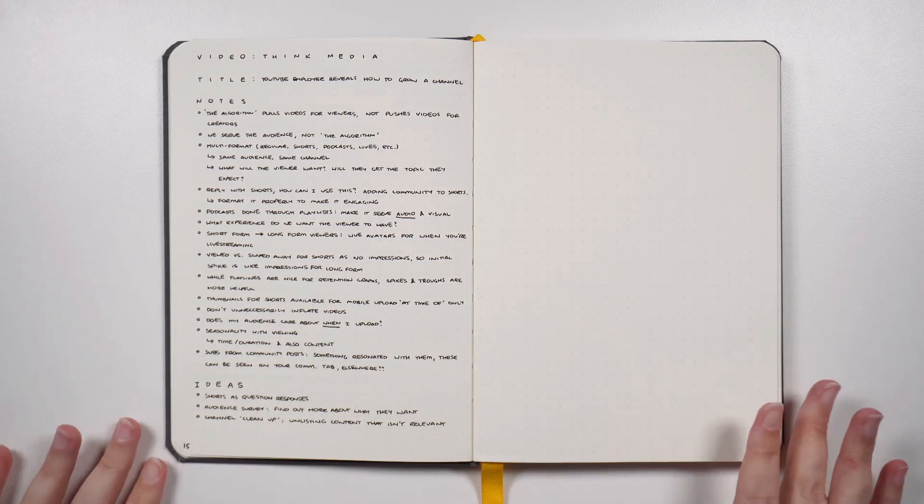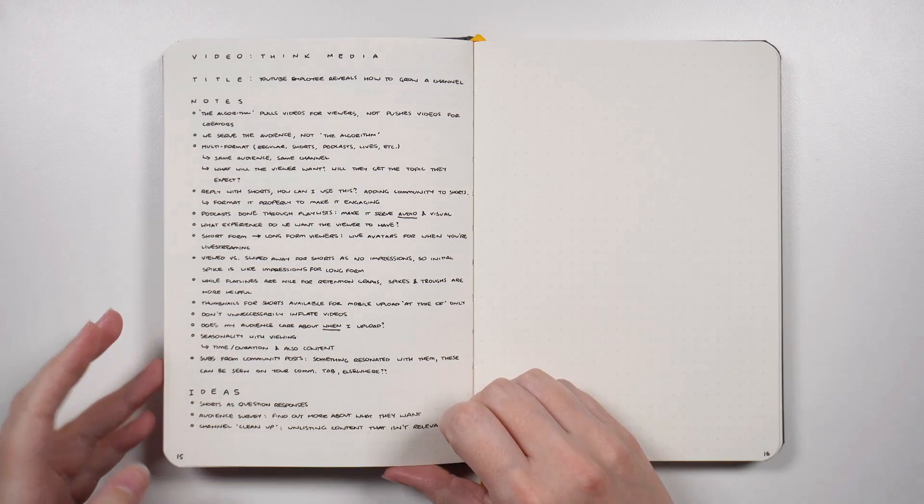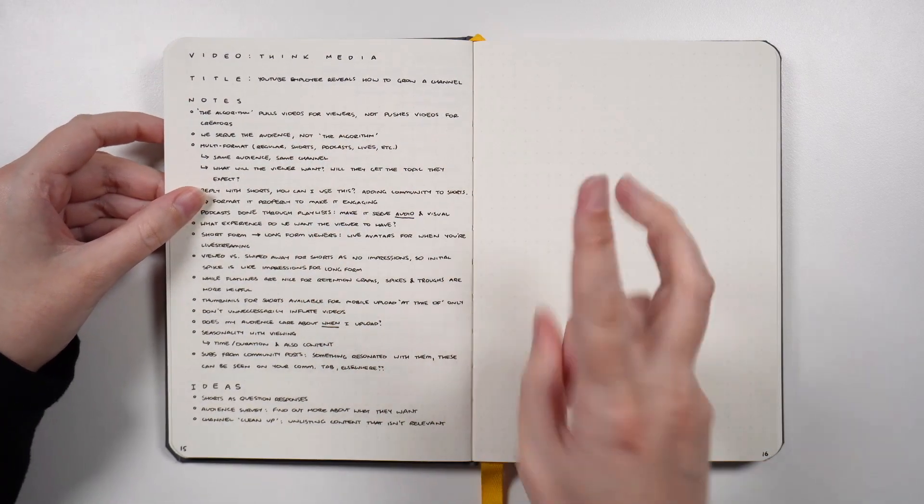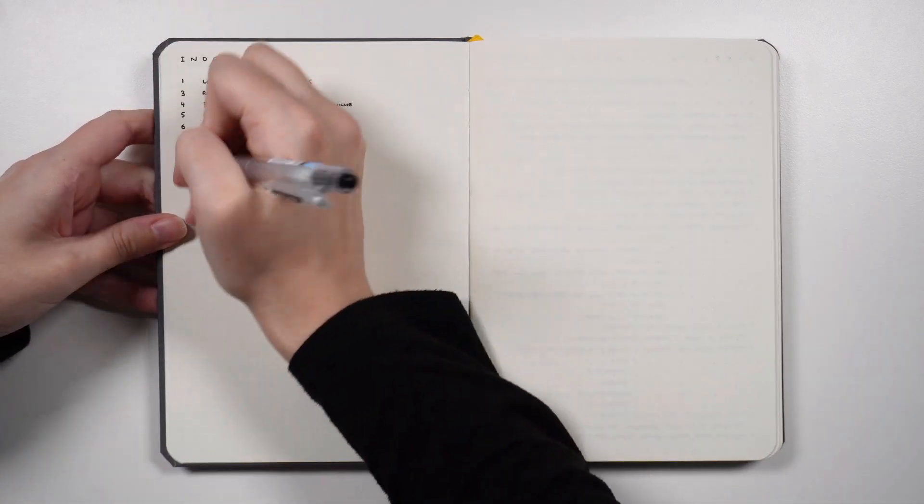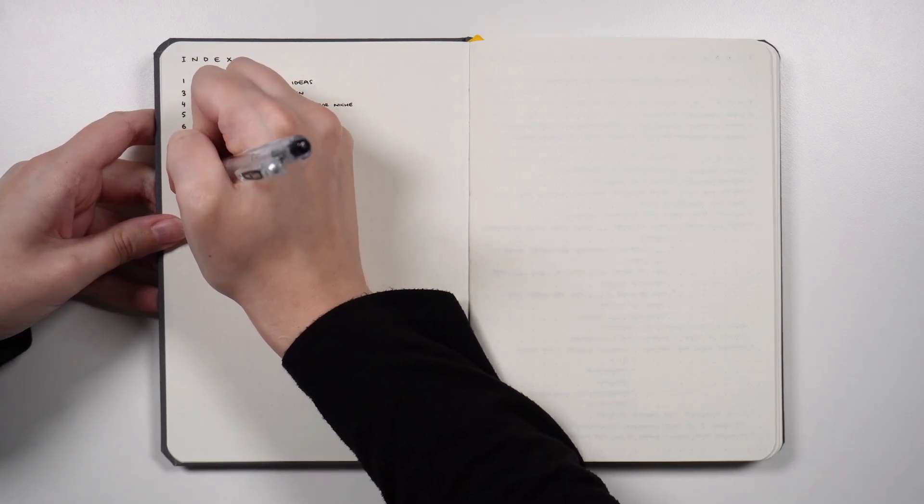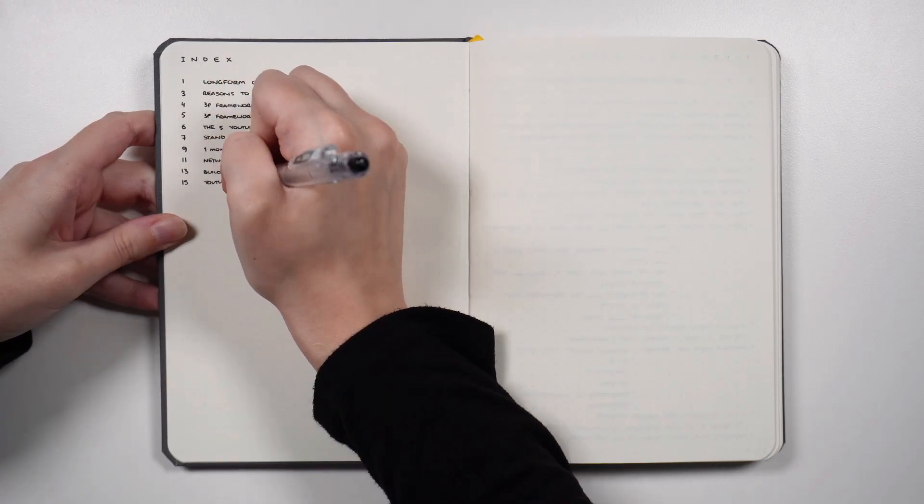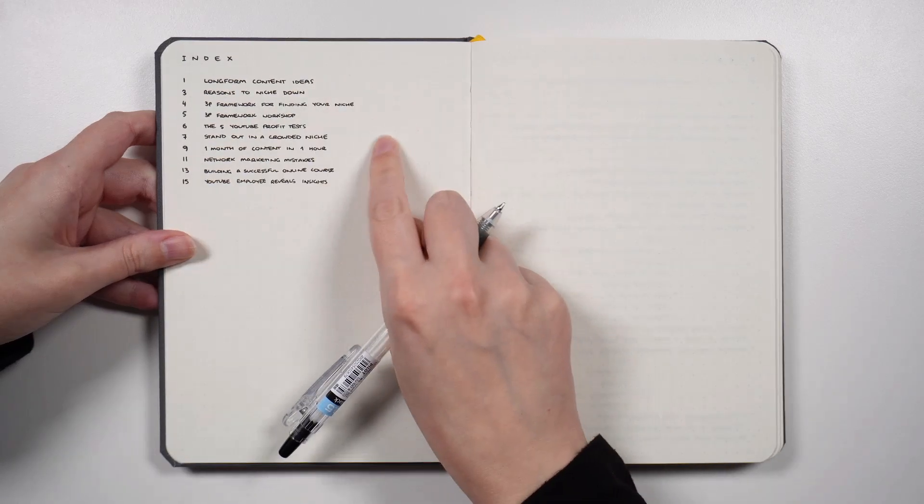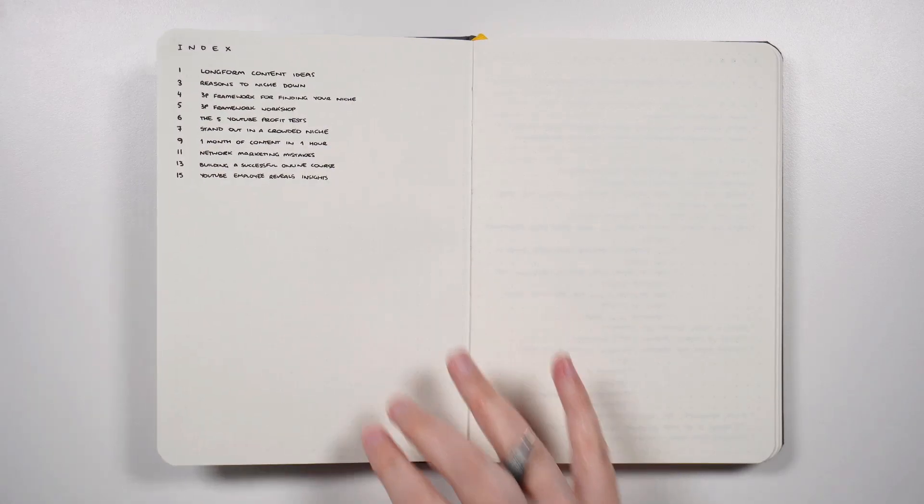While I don't typically include page numbers in my notebooks, in this one I do because things aren't necessarily in chronological order so we do have to add that one to my index. So on page 15 we had YouTube Employee Reveals, so we can flip back to my index and we can write that in here. I just list out the page number, the one that it starts on, so some of these do go across two pages. On page 15 we have YouTube Employee Reveals and I'm just going to say insights. Often the entry that I put in the index isn't the exact title of the piece of content, so if we have a flip through I'll kind of show you what I mean.